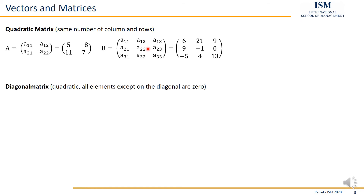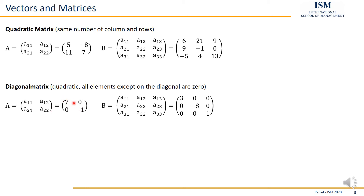A slightly more sophisticated version is a quadratic matrix where everything is zero except for the values on the diagonal. So elements a_11, a_22, a_33 can be non-zero; everything else must be zero. This is called a diagonal matrix. Diagonal matrices are also symmetric by nature — if you were to put a mirror on the diagonal, both sides would show the same numbers.